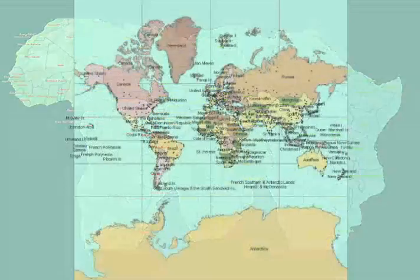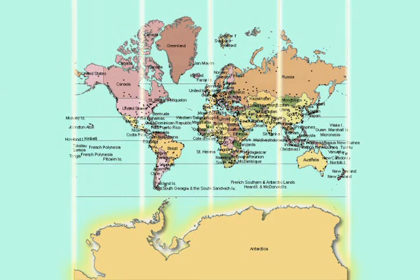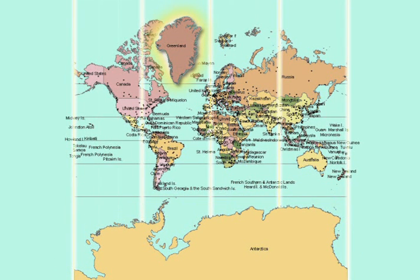For example, using the Mercator projection, Antarctica appears to be a huge continent that wraps around the Earth, and Greenland appears to be just as large as South America, although Greenland is actually only about one-eighth its size.